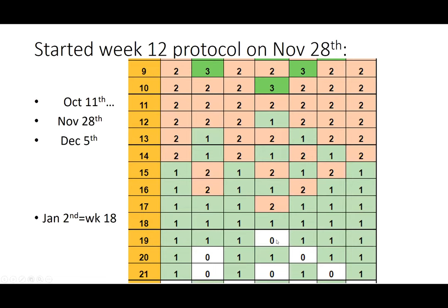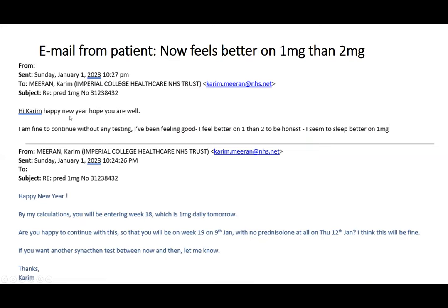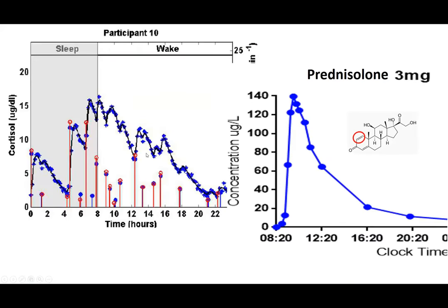She emailed saying she seems to sleep better on one milligram. I wonder if that's because on less replacement she's starting to get her early morning cortisol rise. Looking at the cortisol pulsatility data from healthy volunteers, there's a clear early morning pulse that you don't get with either prednisolone or hydrocortisone. We don't understand what controls the pulse frequency, but ideally I want her to do her own thing — get her off it.